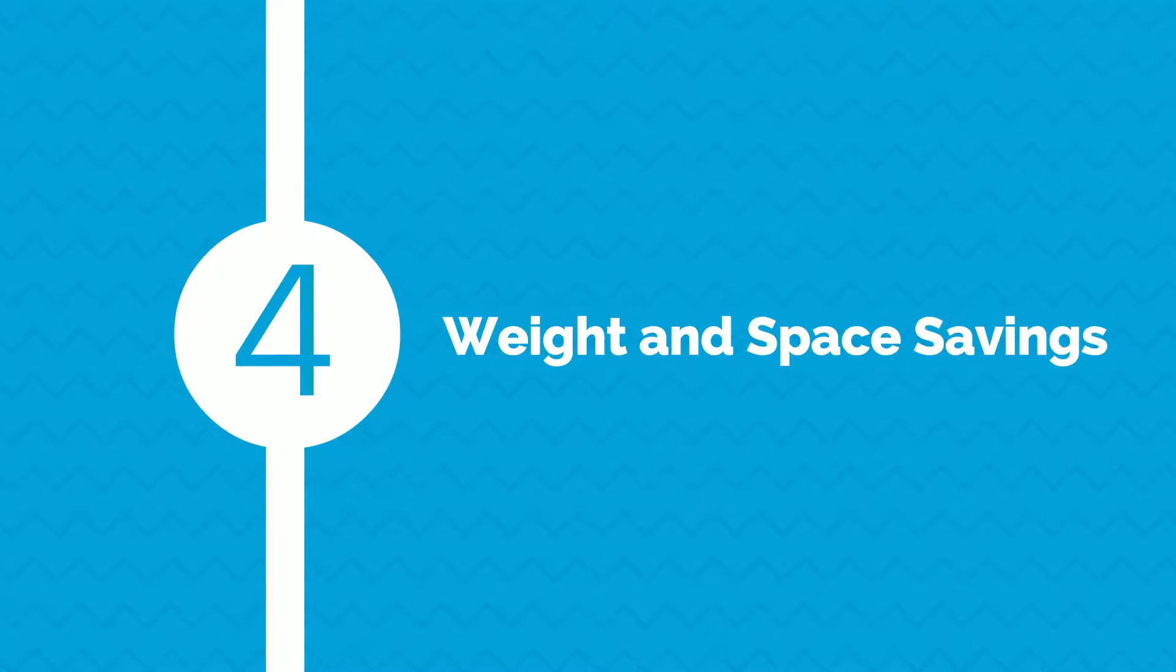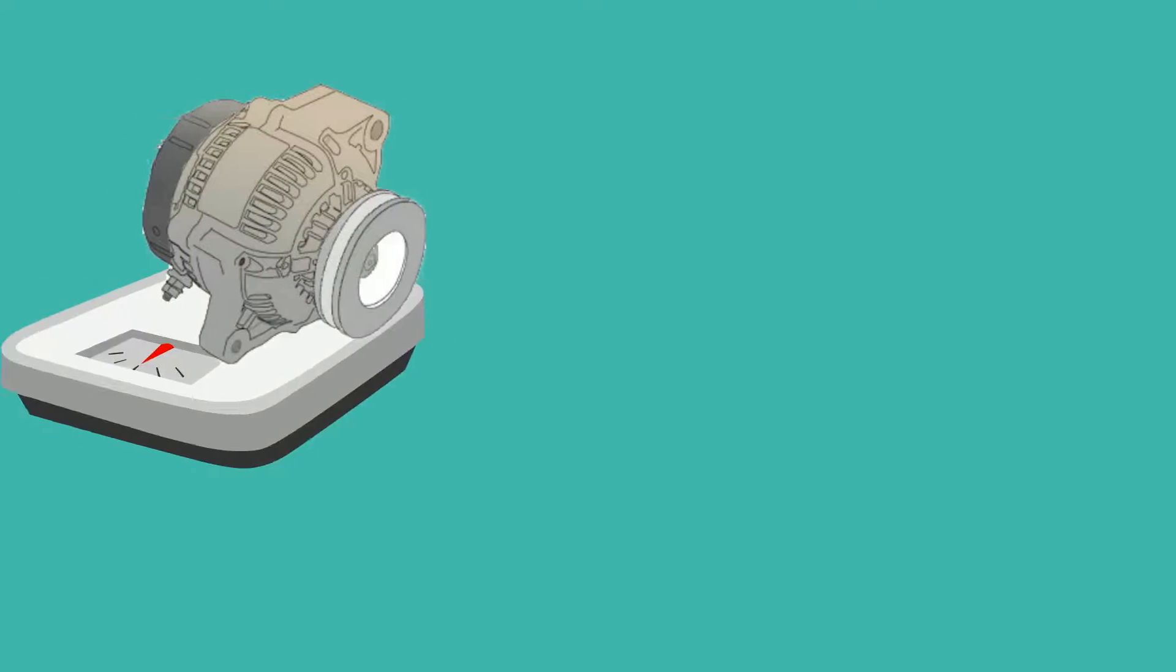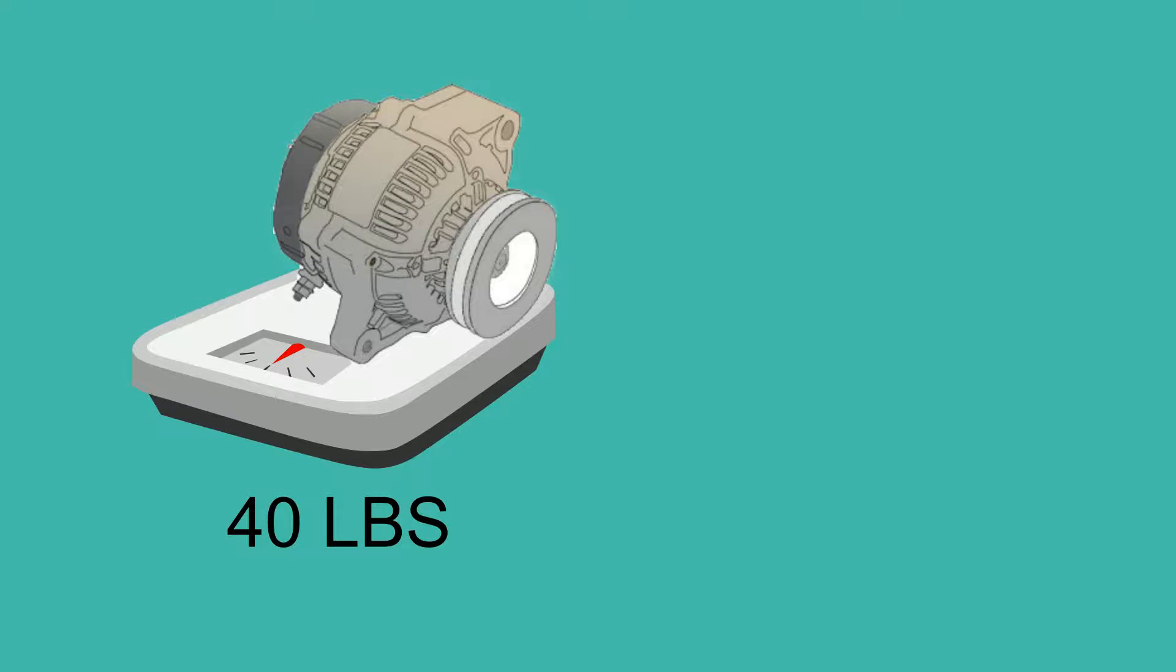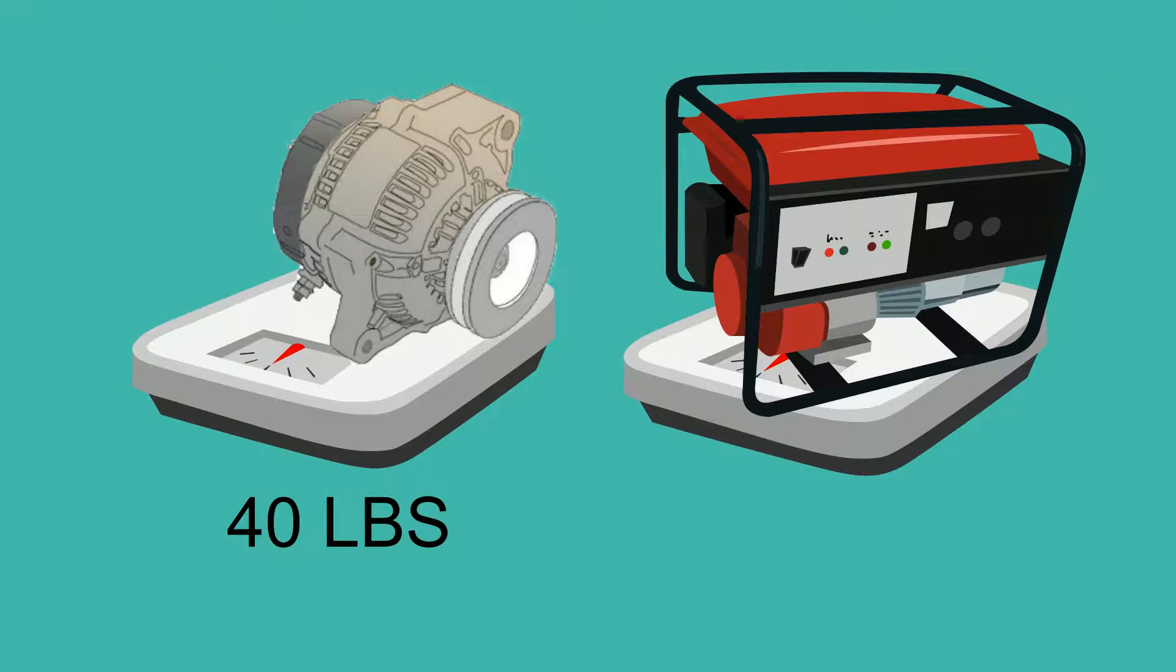Advantage number four, weight and space savings. The GU is about 40 pounds and fits conveniently within the engine compartment. The gas or propane generator runs just over 110 pounds and takes up valuable real estate underneath the chassis, which could be used for the storage of more batteries.